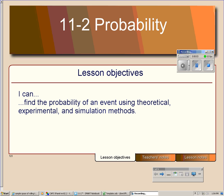This is Chapter 11, Lesson 2, which is about probability. By the end of this lesson, you should be able to find a probability of an event using theoretical and experimental probabilities. And then in class, we will do simulation methods.